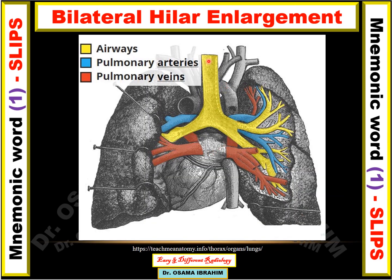This disease diagram shows the hilar structures: the yellow represents the airway, blue represents the artery, and red represents the veins. So if there is any pathology in the bronchial airways in the central area — like small cell lung cancers — it can be included in the differential diagnosis. If there is any abnormality in the pulmonary artery, like pulmonary artery hypertension, it can enlarge the hilum. If there is any abnormality of the veins or lymph nodes, due to any cause, it is also included in the differential diagnosis.